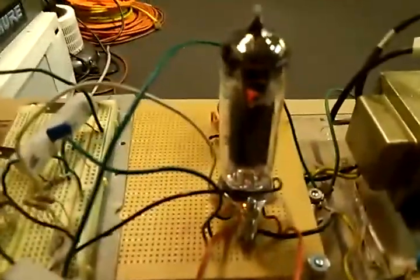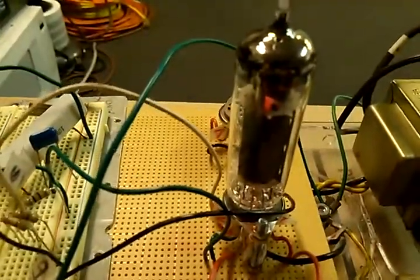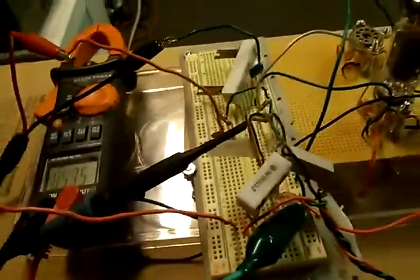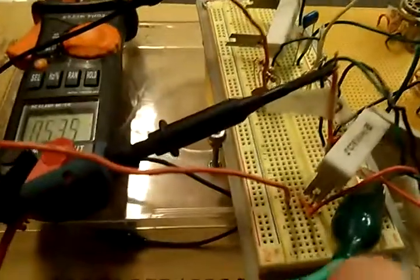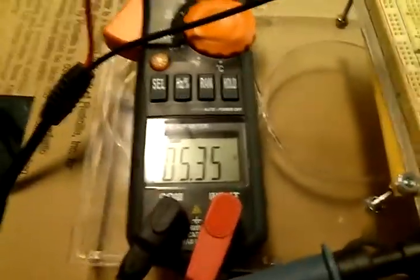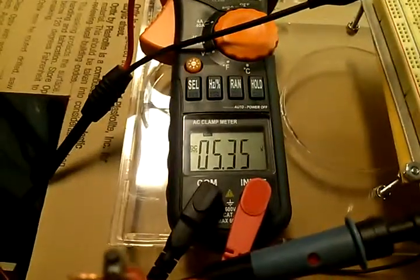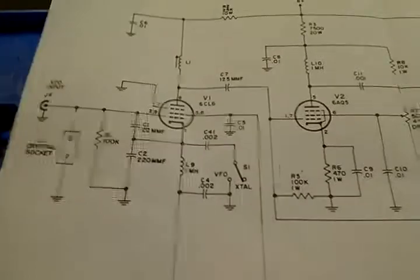This is the tube, EL84, running red hot. We have a Radio Shack prototyping board here. This is the voltage, 5.35 volts DC on the plate circuit. We have a pot right there. Now this is based on a lot of different drawings.